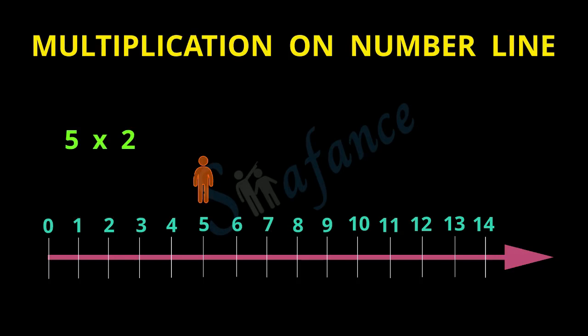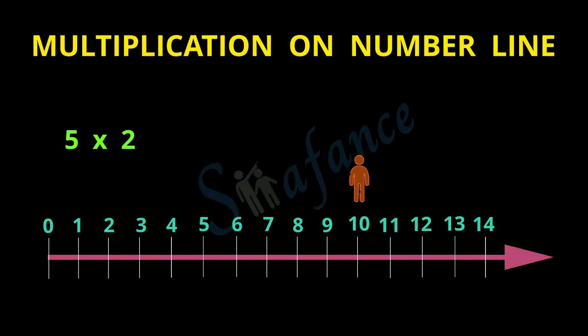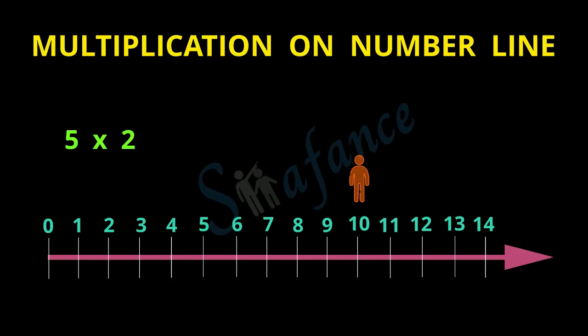This travel from 0 to 5 has to be repeated twice because 5 is getting multiplied by 2. So the person will travel again 5 spaces, but this time starting from digit 5. The person travels 6, 7, 8, 9, 10. We have completed the multiplication by repeating 5 two times, and the person is now at digit 10. So the answer we get by multiplying 5 and 2 on the number line is 10.